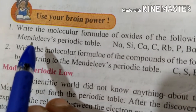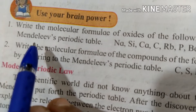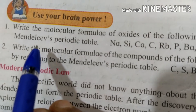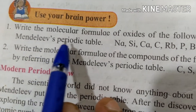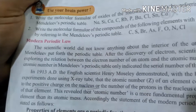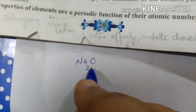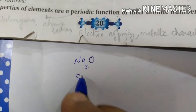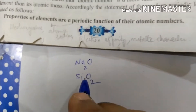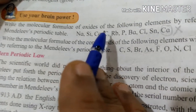Good morning. In the previous period we discussed the merits and demerits of Mendeleev's periodic table. Now we will see some questions. Write the molecular formula of oxides of the following elements by referring to the Mendeleev periodic table. For example, sodium oxide, then silicon dioxide. In this manner we can write the oxides — that means we add an oxygen atom with these elements.